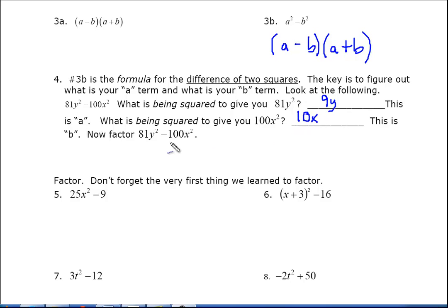And what I like to do is when we recognize that we have the difference of squares, if we start out with parentheses squared, minus in between, parentheses squared, then we can fill in what our a is and then what our b is. So what's being squared to give us this 81y squared?